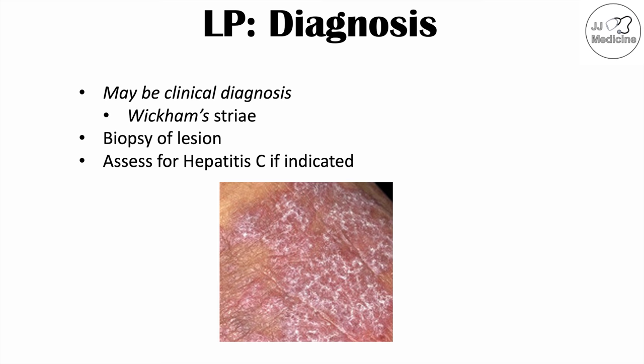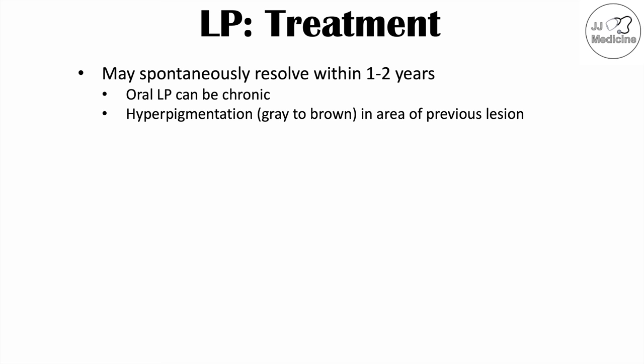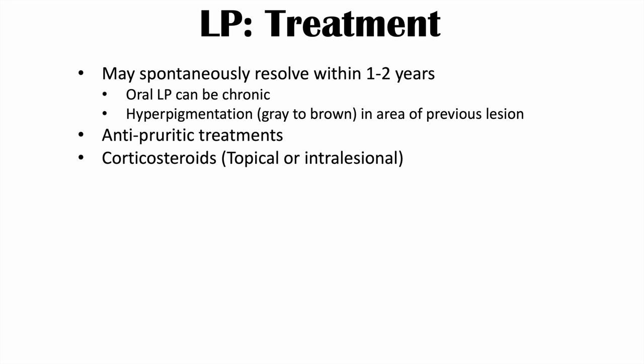Some cases spontaneously resolve within one to two years on their own. However, oral lichen planus can be a chronic condition. When lesions resolve, there can be residual hyperpigmentation — often gray to brown in the area of the previous lesion. Because this is a pruritic condition, antipruritic treatments can be helpful. Corticosteroids are often used, starting with topical corticosteroids first. If the condition becomes refractory, intralesional corticosteroids such as triamcinolone can be utilized. For very severe cases with diffuse lesions, oral prednisone for short periods may be used.